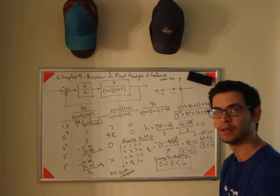If you make K 7, the system is going to go unstable. If you make K negative 1, the system goes unstable. If you make K 3, you're good to go.